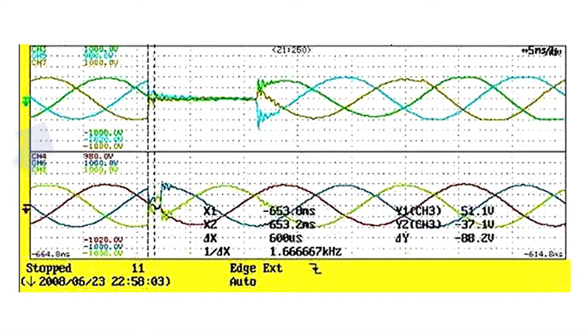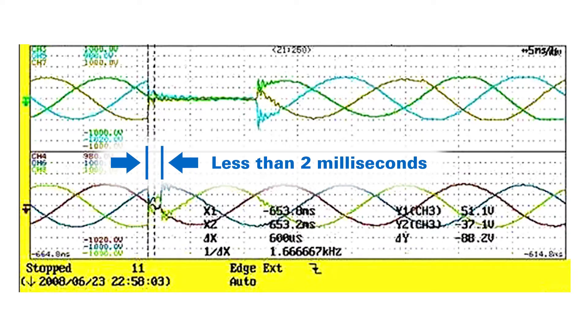Here we see the input power disrupted coming into the UPS, and the output power here. At the same point, we do not go to zero volts, but continue to produce a three-phase output. And the transition time from utility power to inverter power is in fact less than two milliseconds.